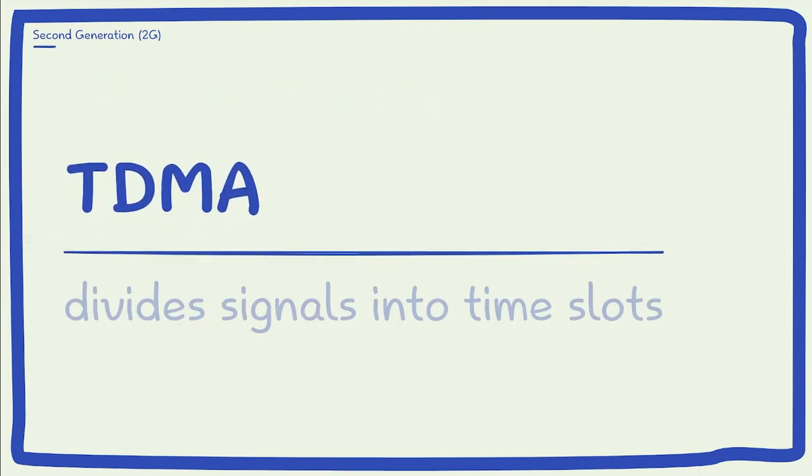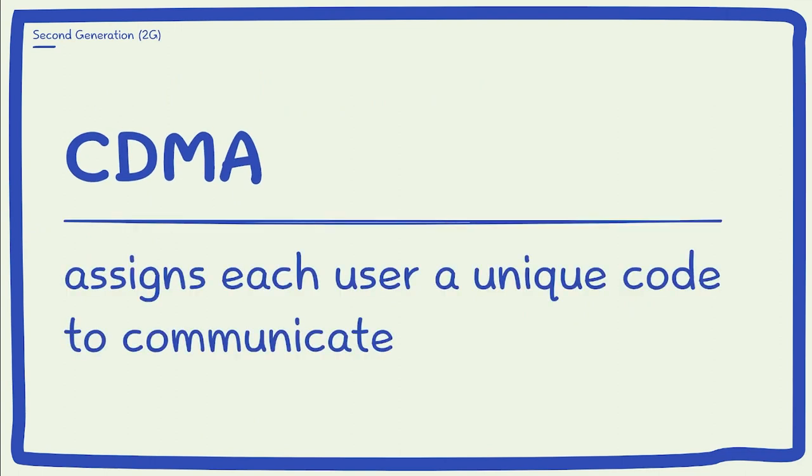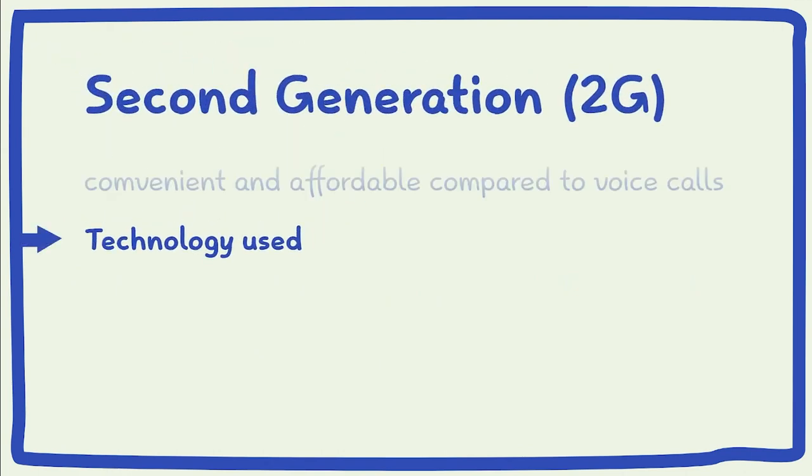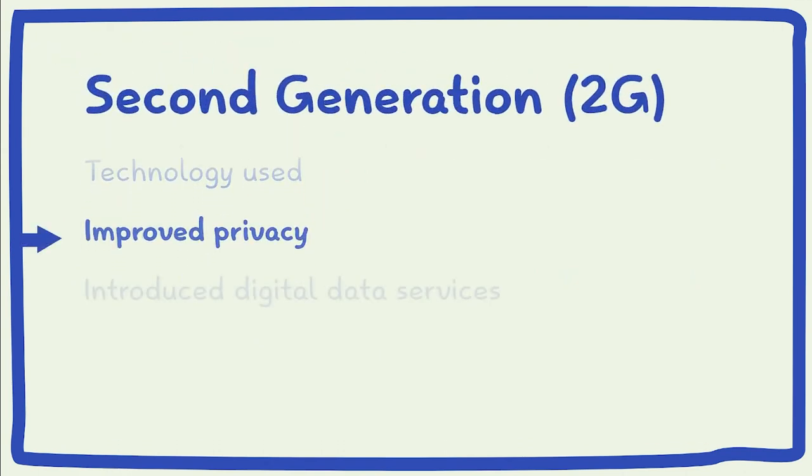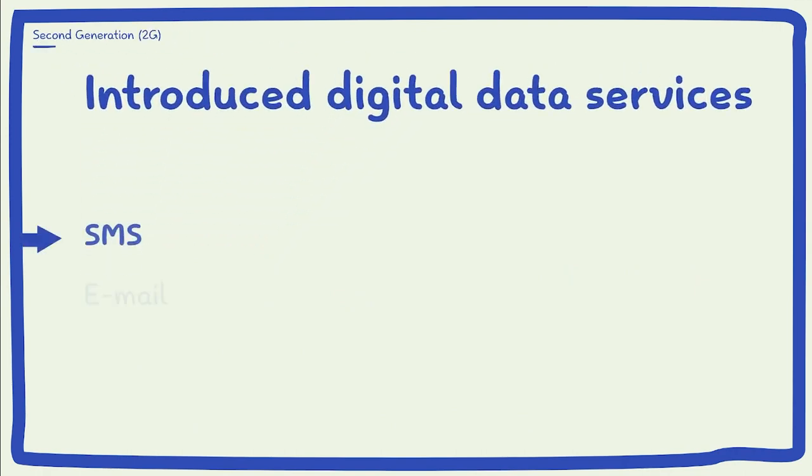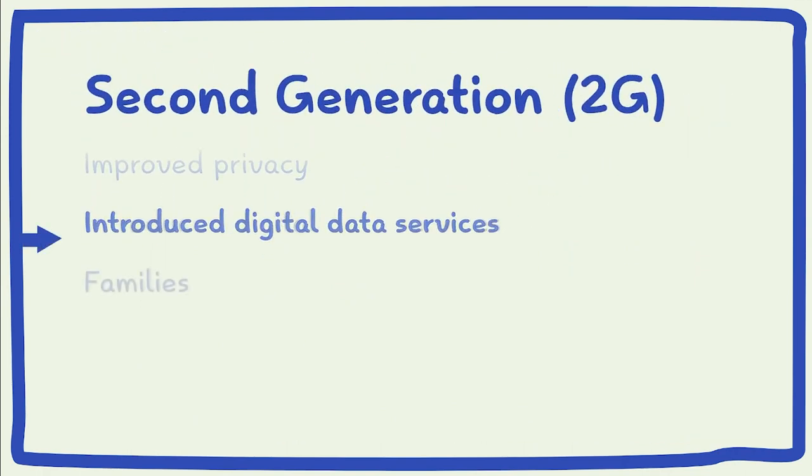TDMA divides signals into time slots while CDMA assigns each user a unique code to communicate over a shared physical channel. 2G technology offers improved privacy compared to previous technologies and introduced digital data services like SMS and email that help bring the world closer.